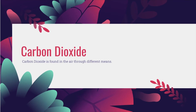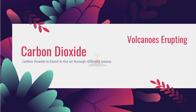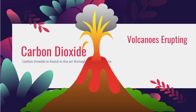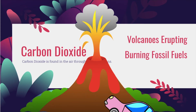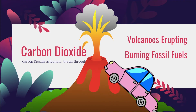Carbon dioxide is found in the air through different means. We see it through volcanoes erupting, burning fossil fuels, and animals.